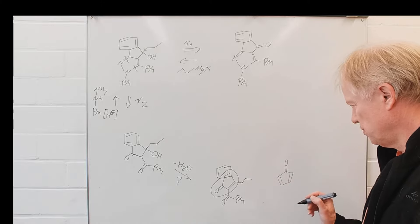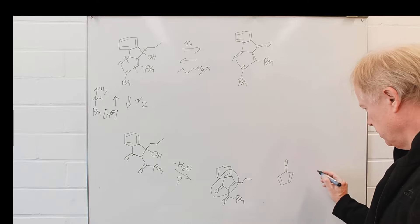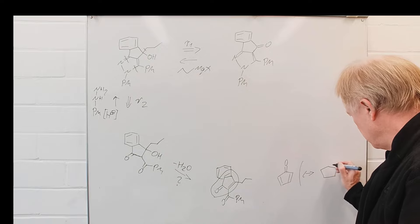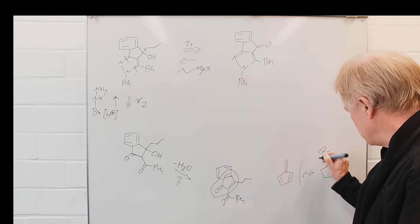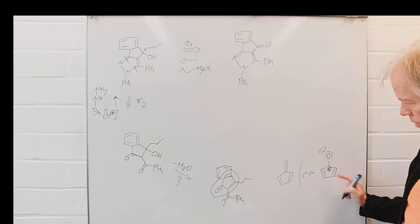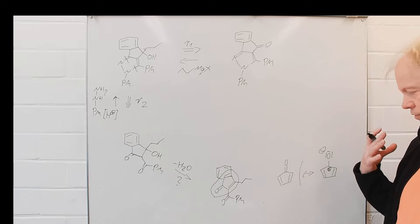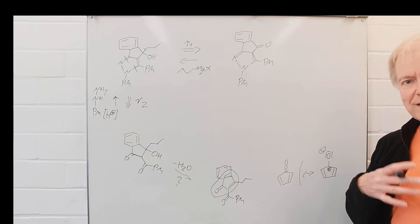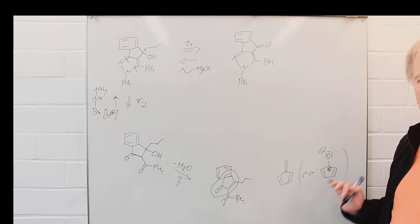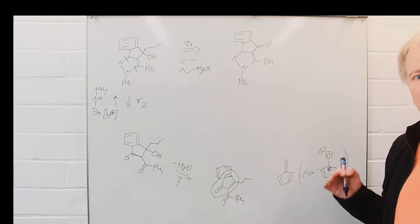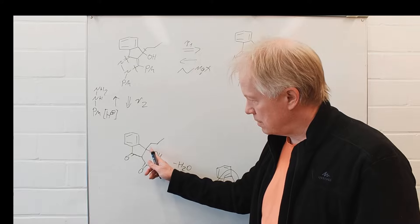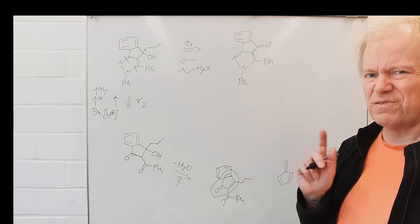And this is known to be rather unstable, since its mesomeric structure with the negative charge at the oxygen and the positive charge here in the five-membered ring. This resembles a cyclopentadienyl cation, which has anti-aromatic character, and therefore is thermodynamically disfavored, and therefore we can assume that the condensation here to this structure does not occur that readily.